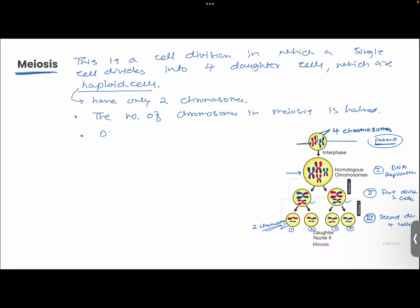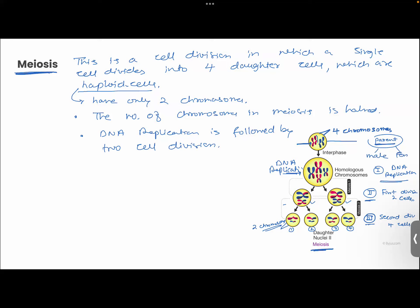The number of chromosomes in meiosis is halved. DNA replication occurs and is followed by two continuous cell divisions. First it got divided into two daughter cells and then into four daughter cells. So the daughter cells will have only half the number of chromosomes in comparison to the parent cell.